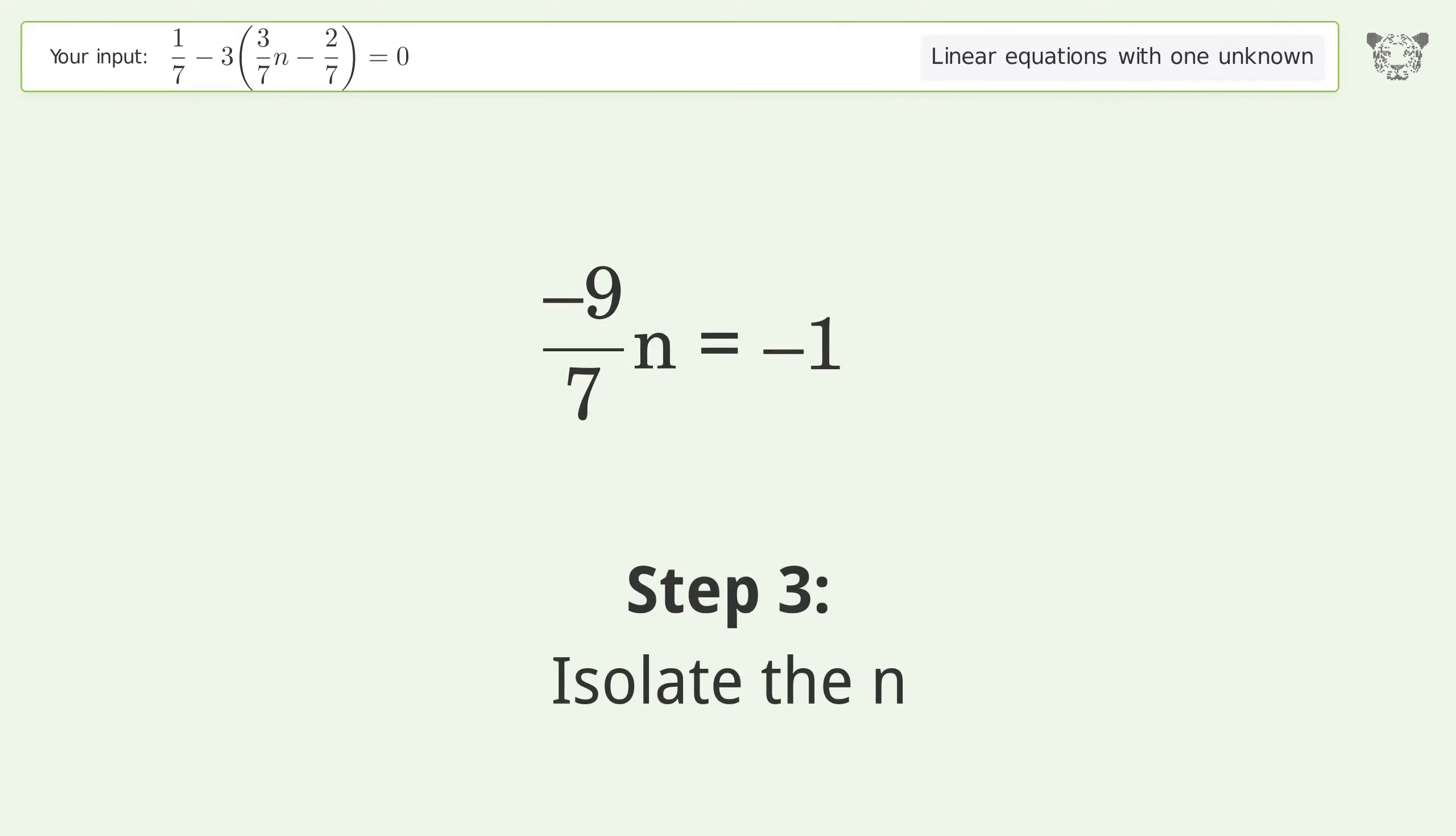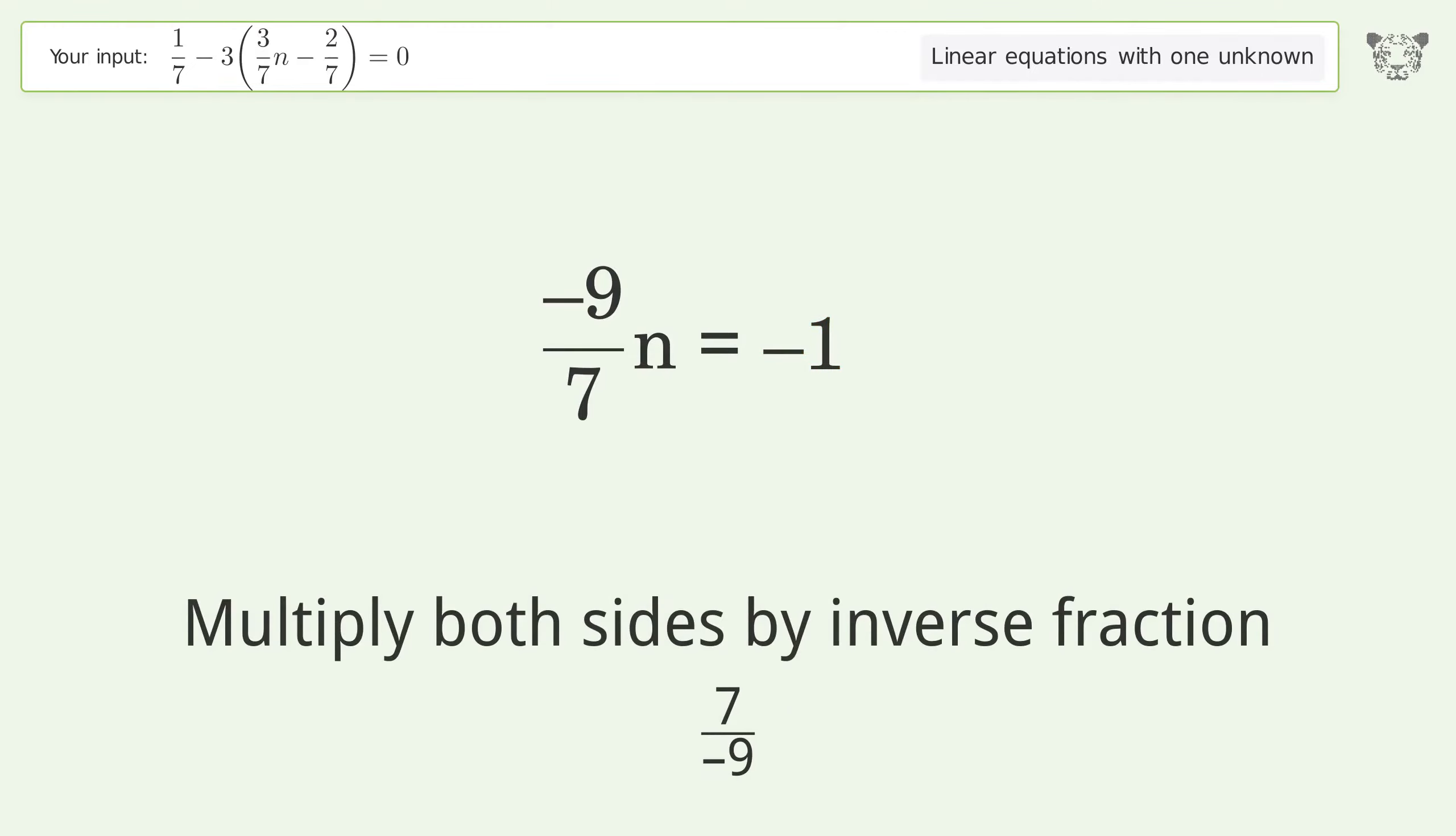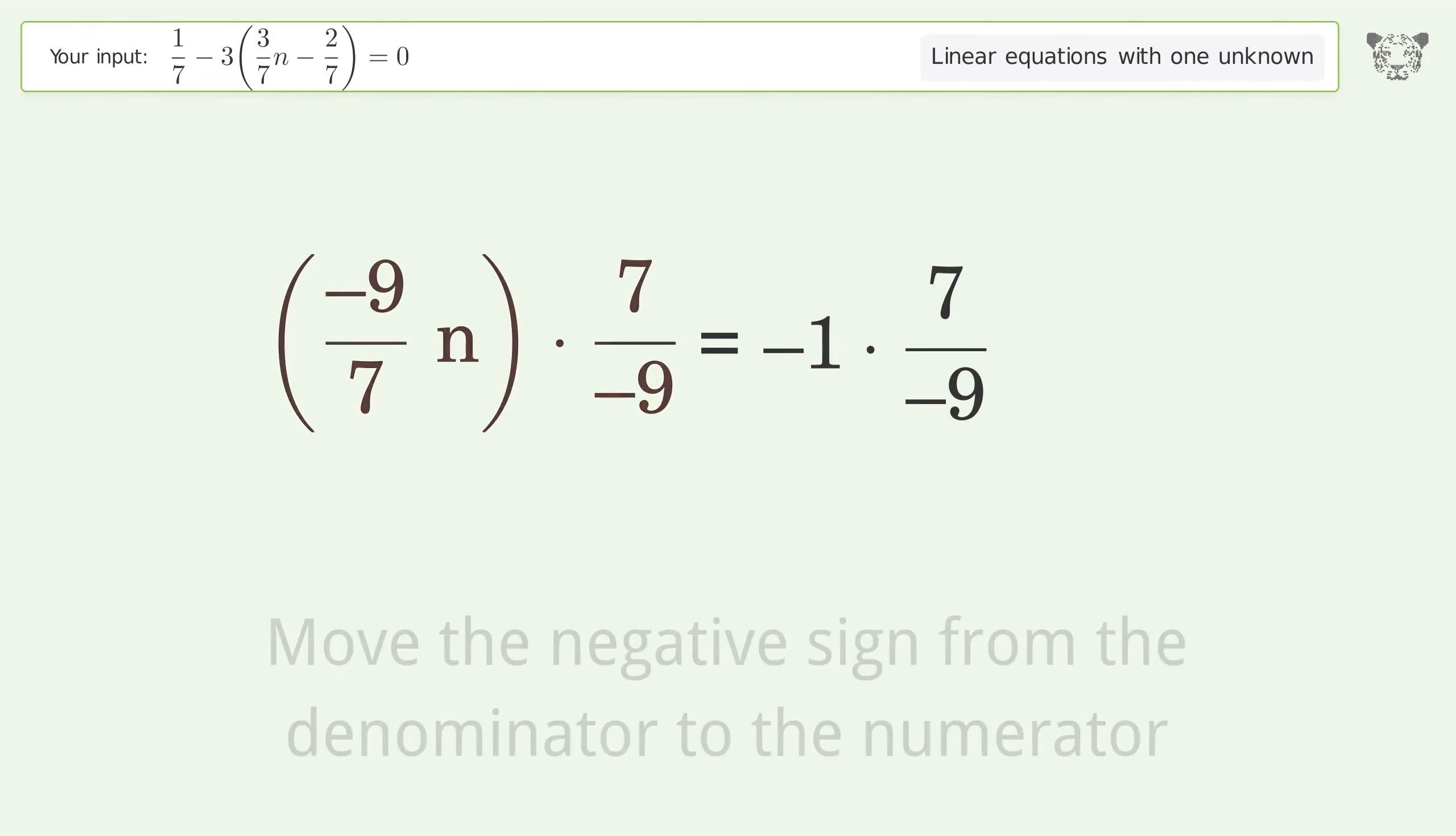Isolate the n. Multiply both sides by inverse fraction 7 over negative 9. Move the negative sign from the denominator to the numerator.